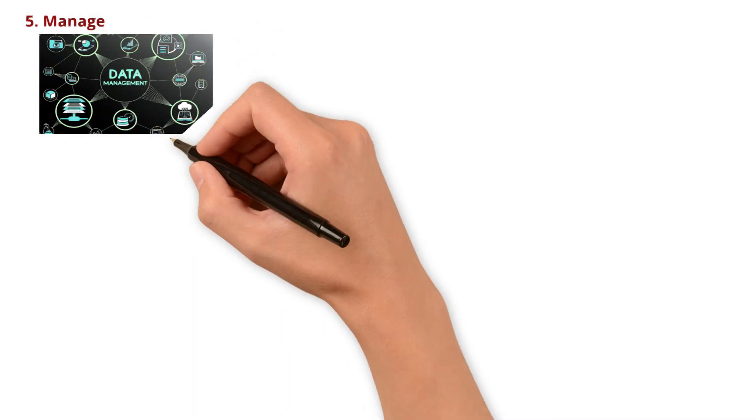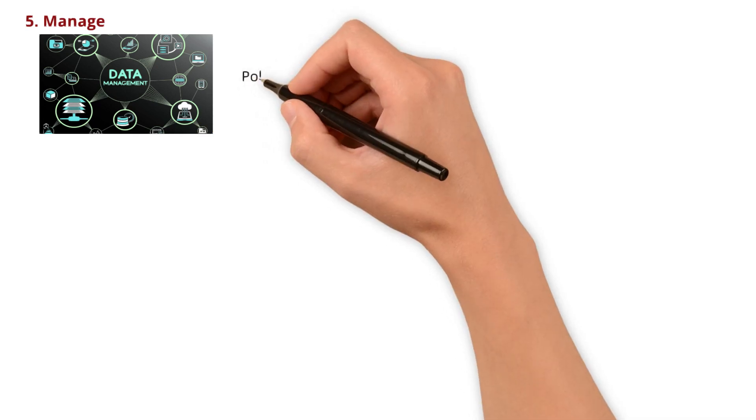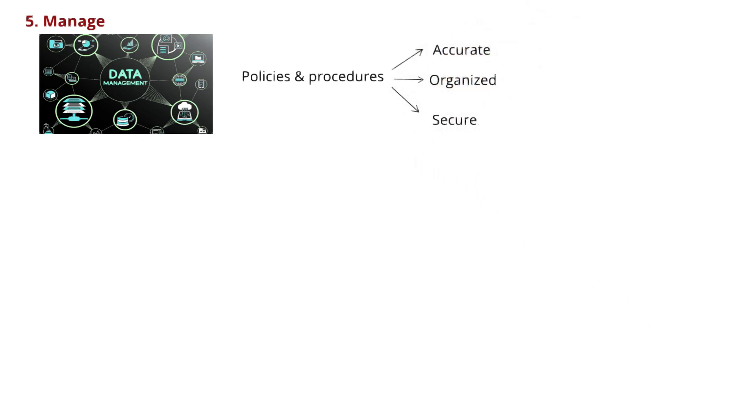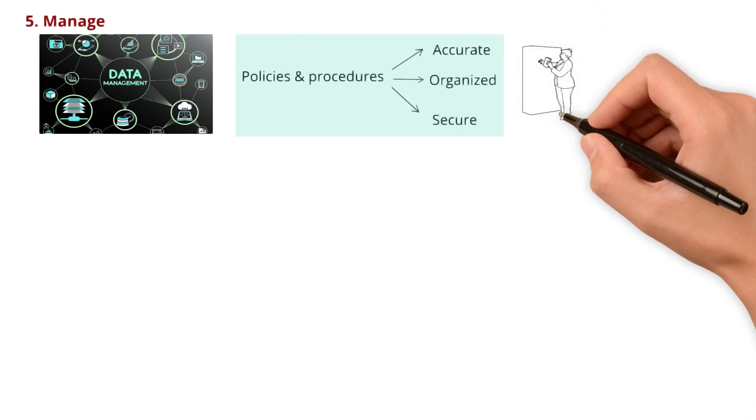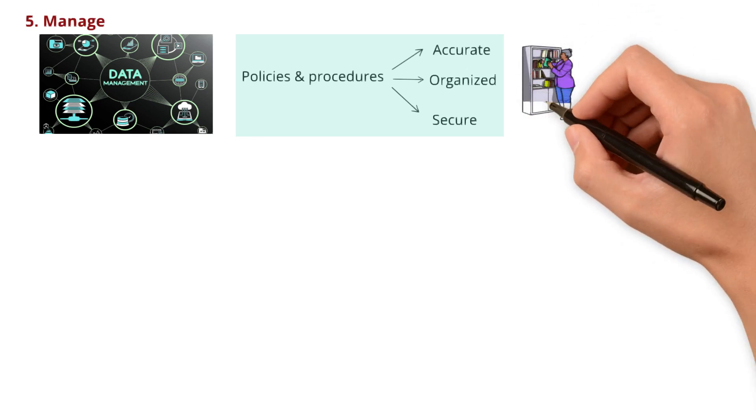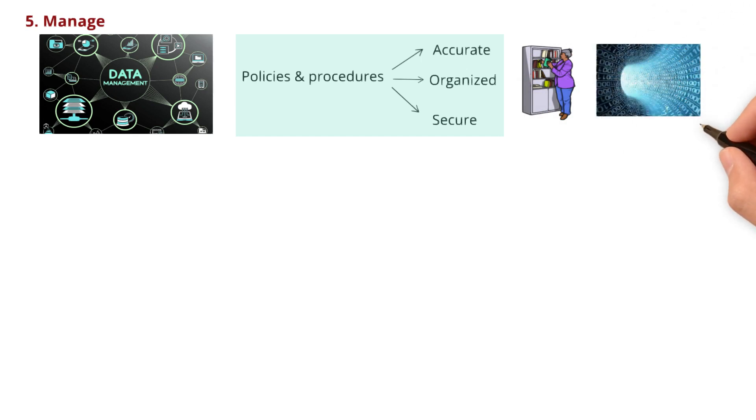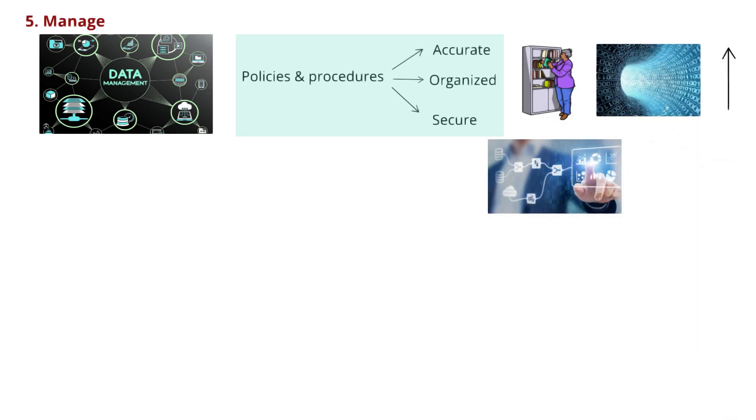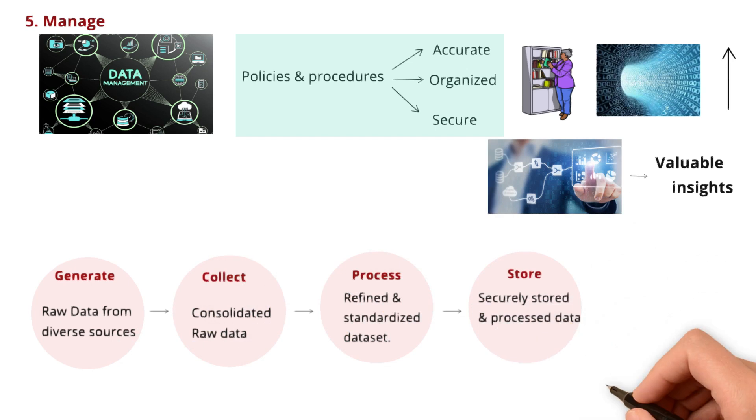As data accumulates, effective management becomes essential. This involves implementing policies and procedures to make sure data stays accurate, organized, secure, and ready for action throughout the lifecycle. It's like having a meticulous librarian who not only keeps the books organized, but also makes sure they're protected and easily accessible. As organizations create and consume data at unprecedented rates, data management solutions become essential for extracting valuable insights from vast quantities of data.